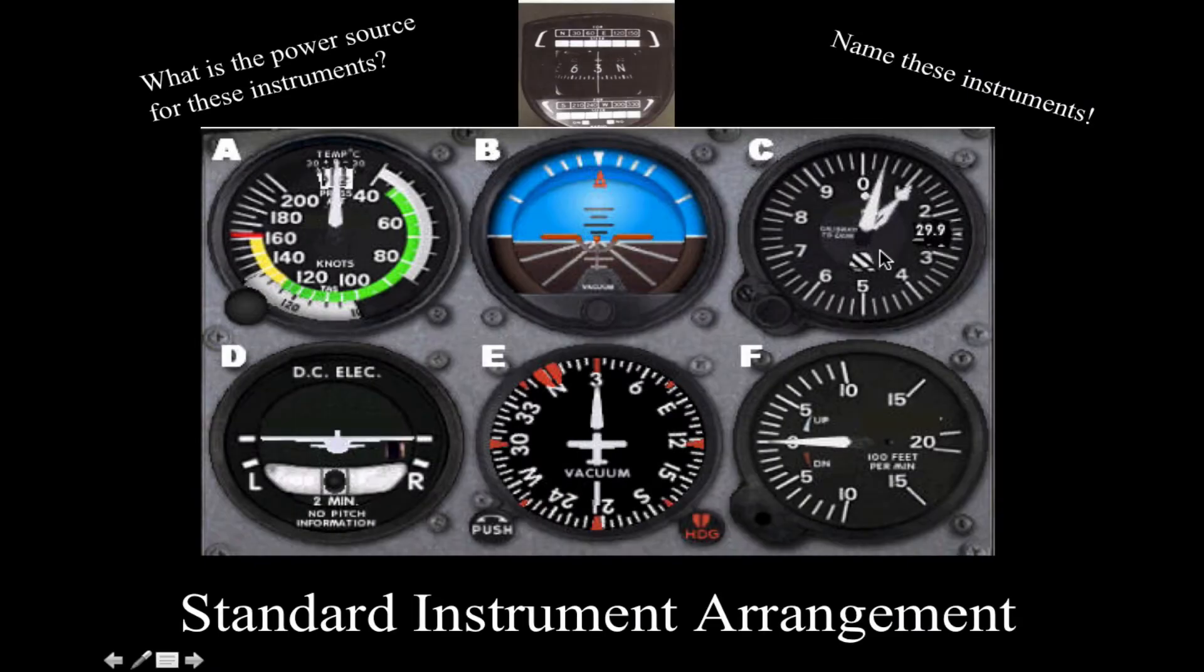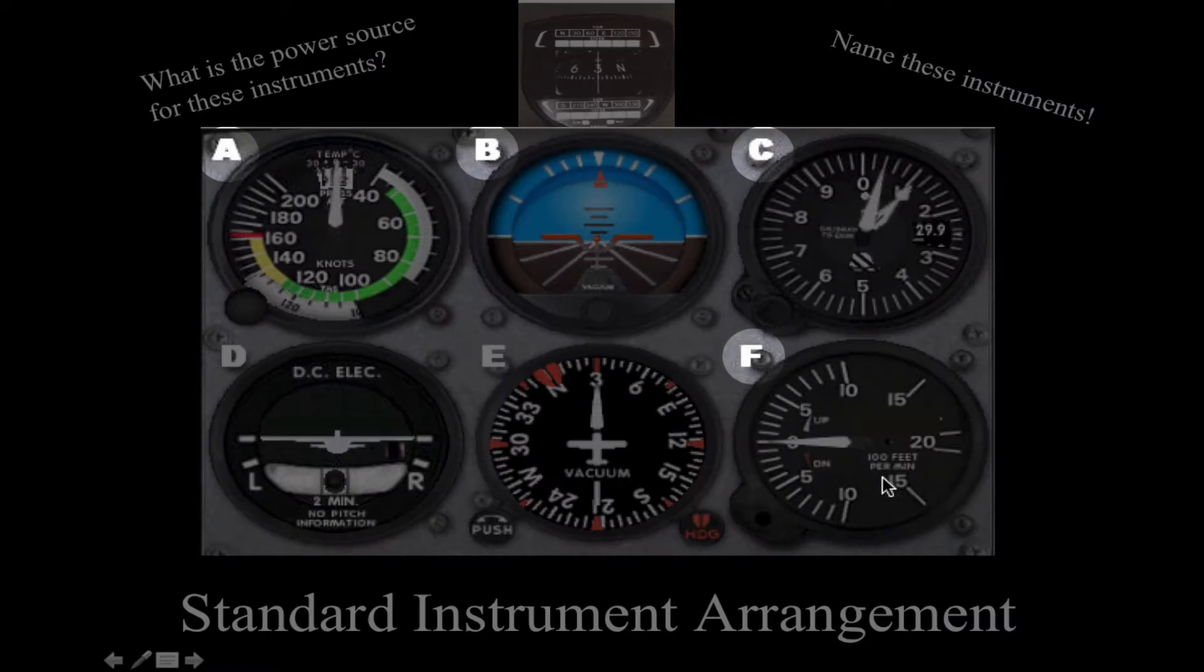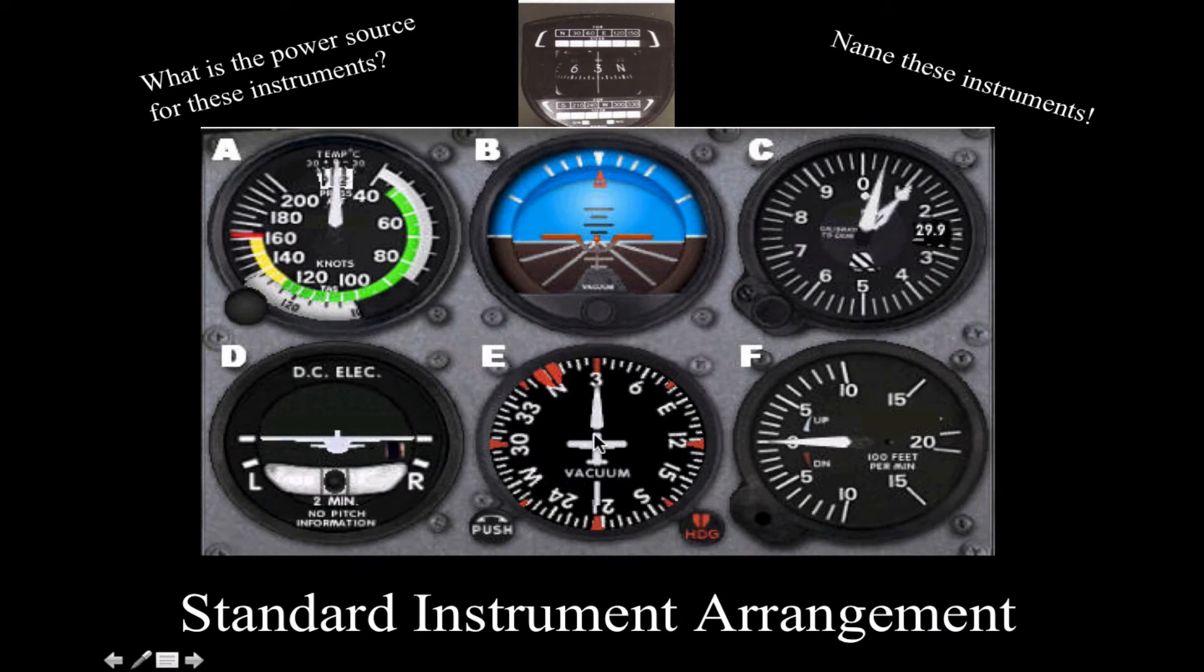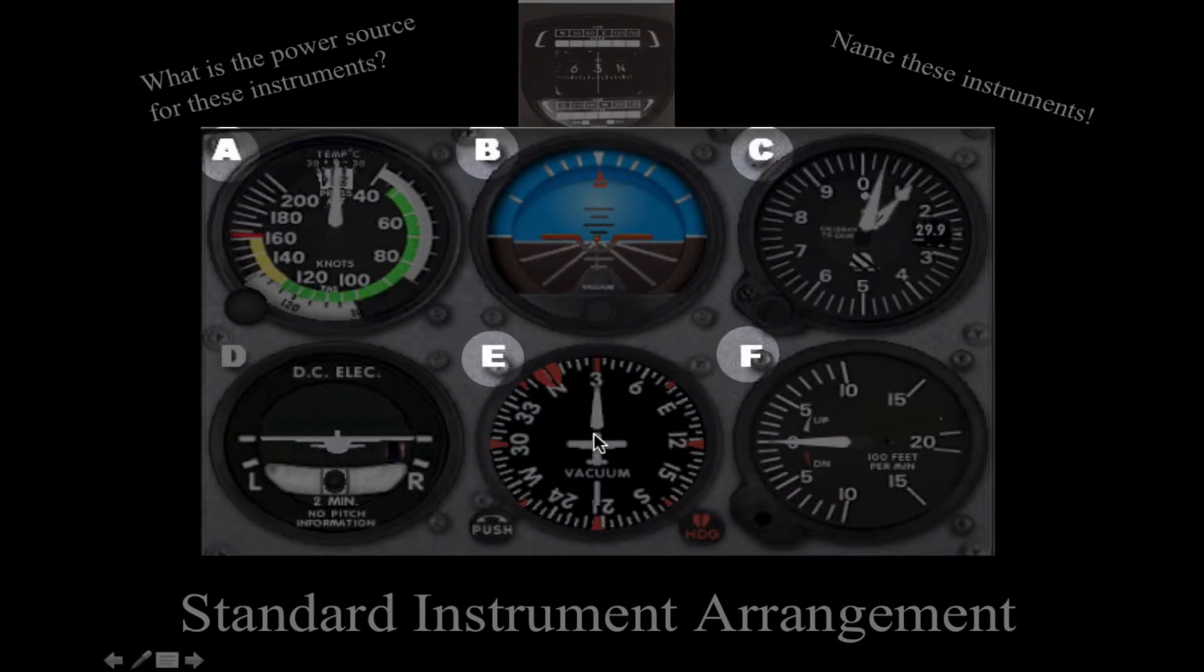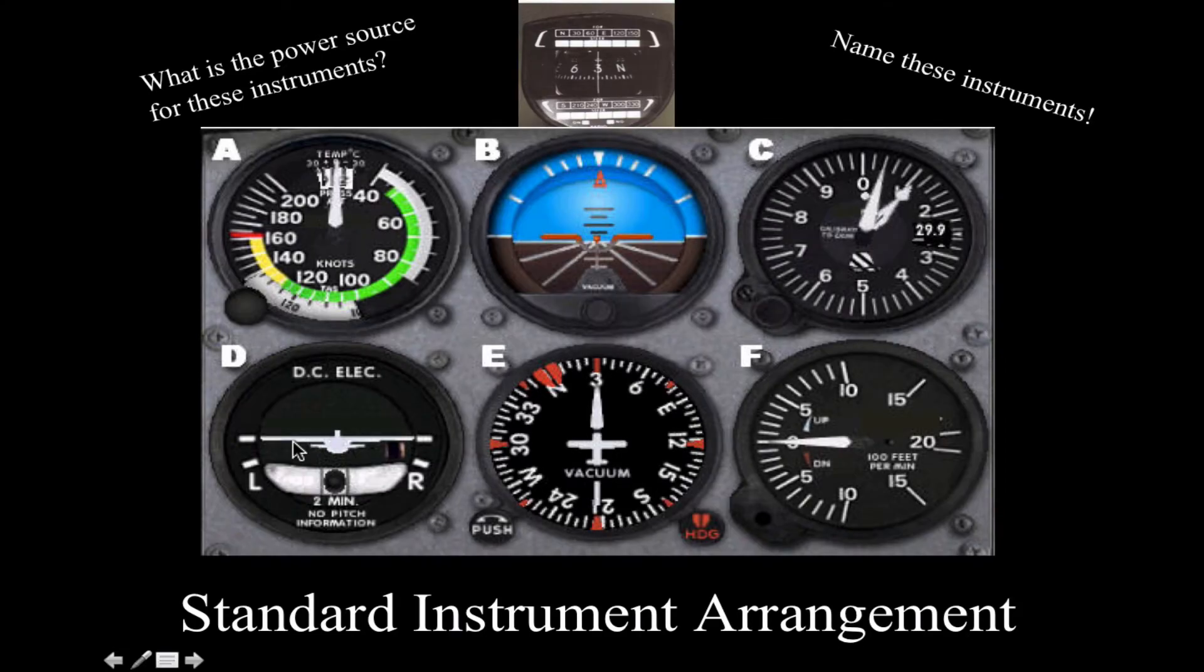And then below that, F is our VSI, vertical speed indicator. Next to that, E is our heading indicator or DG, directional gyro. And then D is our turn coordinator. In this case, we've got the rate of turn information with a little miniature airplane, and then we've got the ball or the inclinometer. That's our six traditional six pack of instruments.